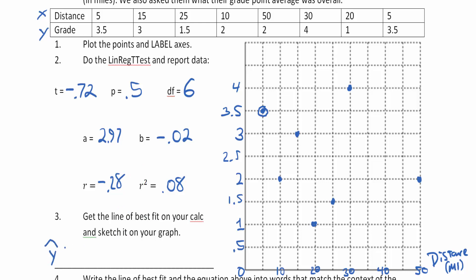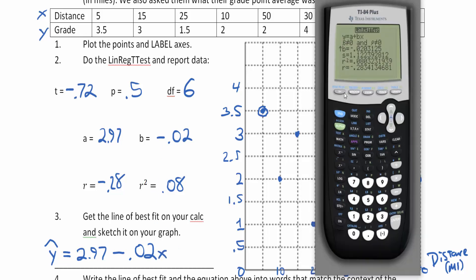Now we'll get the line of best fit from the calculator and sketch it on the graph. My ŷ is equal to my b value 2.97, and I subtract — because b is negative — 0.02x. Let's take a look at that on the calculator. Go to Y=, and notice Plot 1 may be turned off — move up to the top and hit ENTER to turn it on.